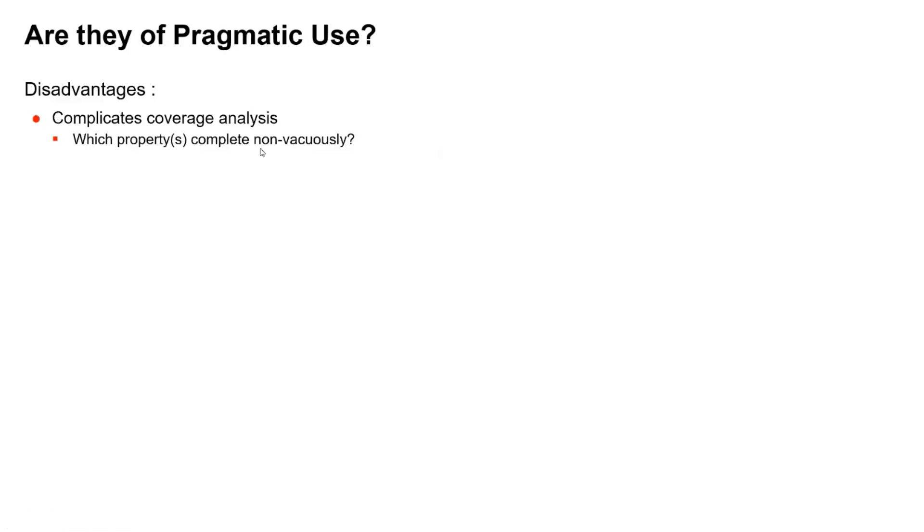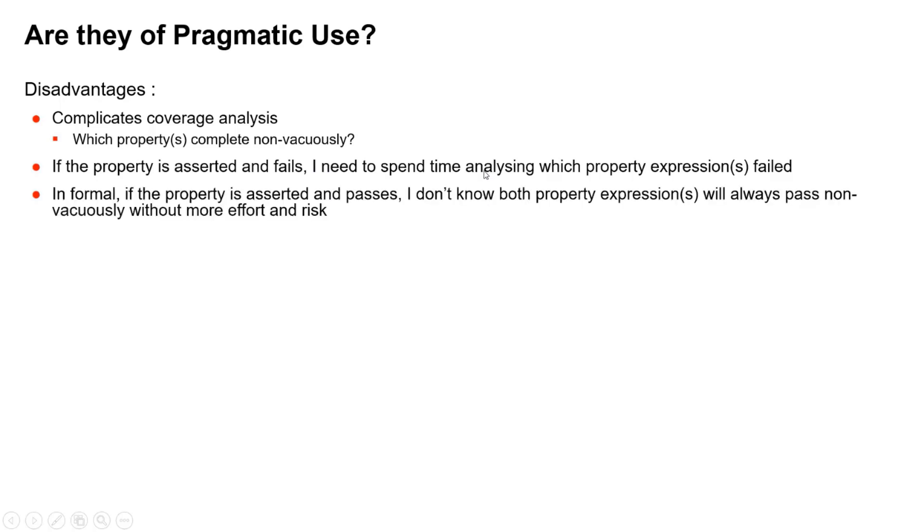Well, the disadvantages are they complicate coverage analysis. You know, which one of the properties completed non-vacuously? If the property is asserted and fails then I need time to understand which one failed—which one of the two. It could be both did. In formal, if the property is asserted and passes I don't know whether the expressions will always pass non-vacuously without more effort and risk. We're going to do this by defining coverage perhaps but it's really a moot point because you'd never use this in the first place.